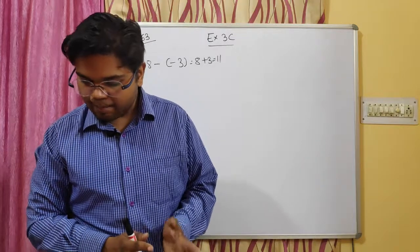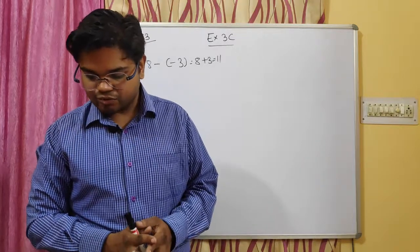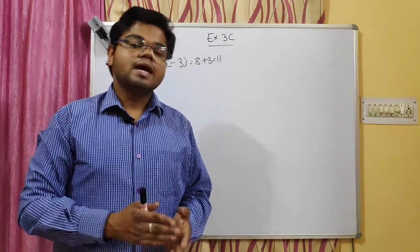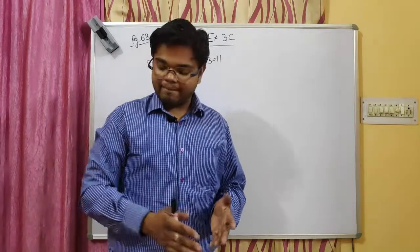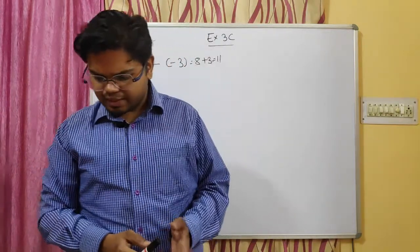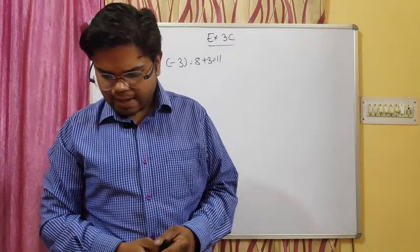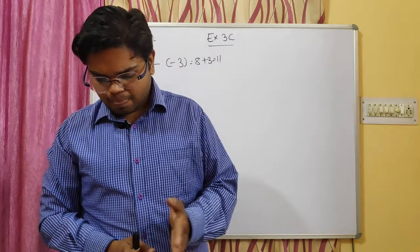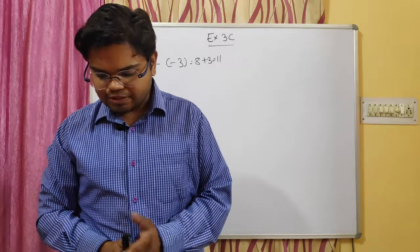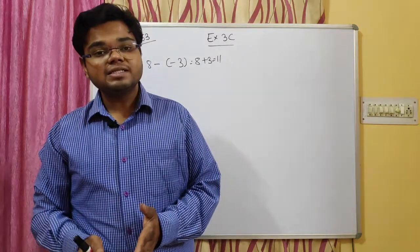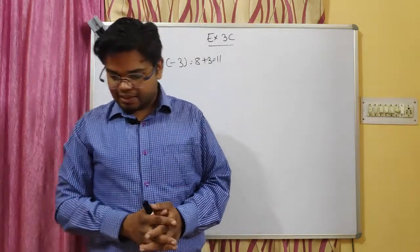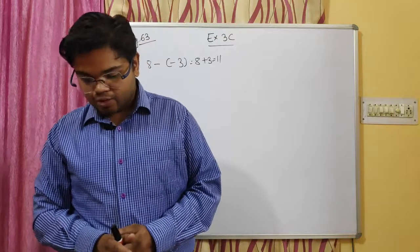Second part: minus 9 minus minus 4. Minus minus 4 becomes plus 4, so minus 9 plus 4 equals minus 5. Third part: minus 6 minus plus 2. Minus plus is minus, so minus 6 minus 2 equals minus 8.